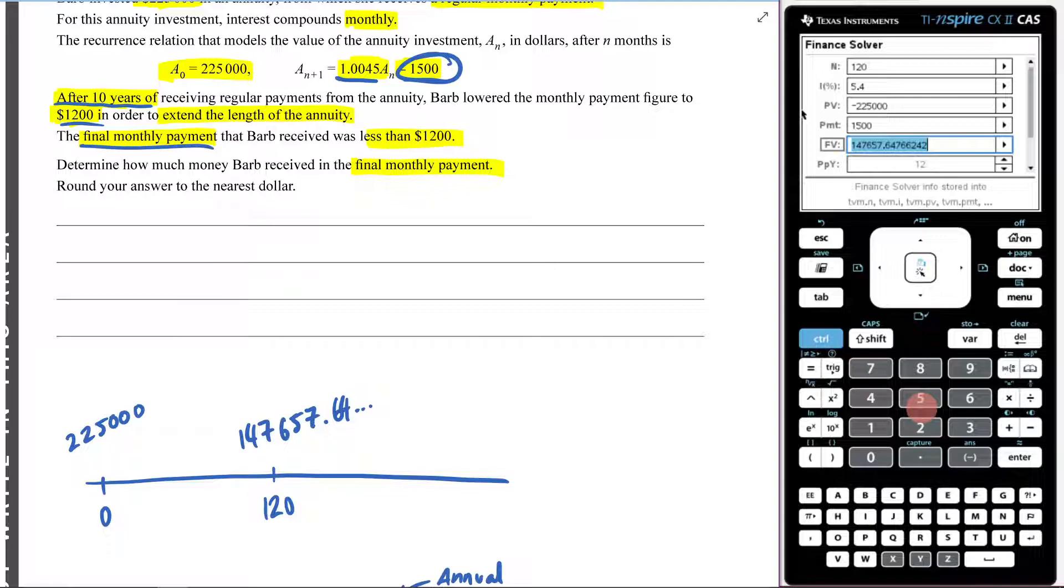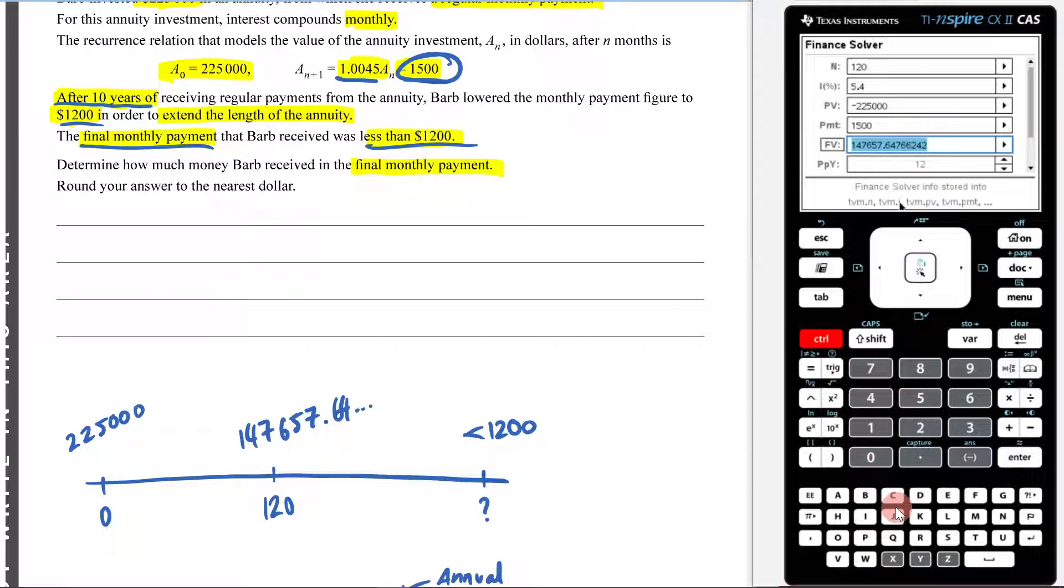Now it says the final monthly payment Barb received was less than 1,200. So what I now want to figure out is, alright, how long do I have to wait until I get less than $1,200 in here? So what I'm going to do now is I'm going to take my future value. So control C, I can take it. I can come up to my present value because that's now how much I have in there. So control V to paste.